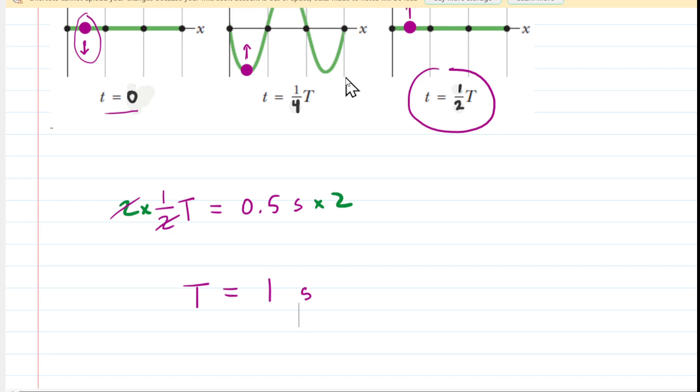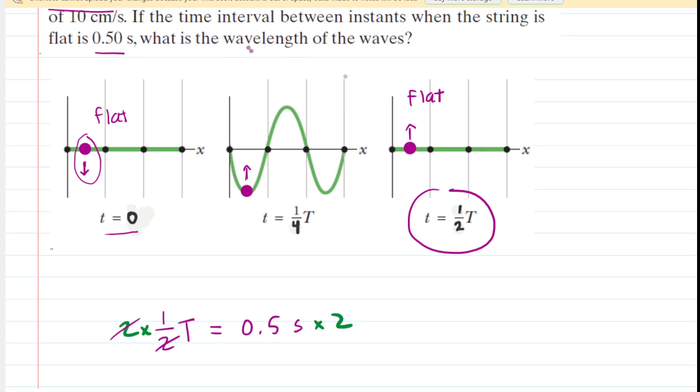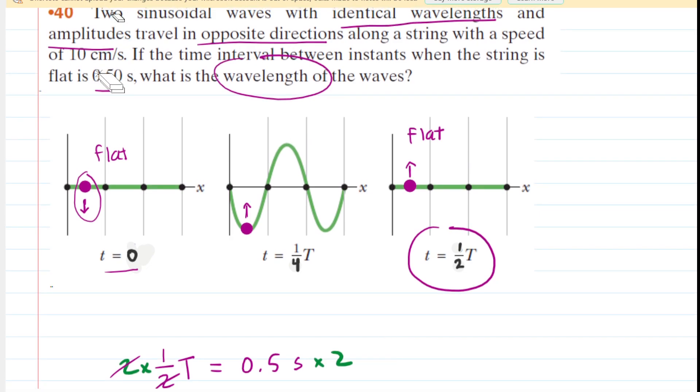Now, this is going to be helpful to us because the question wants us to calculate the wavelength of the wave. But we also are given the speed. The speed was 10 centimeters per second.